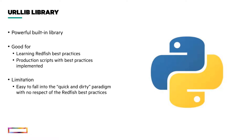The urllib built-in Python library is the equivalent of the InvokeWebRequest PowerShell command presented earlier. The advantage of this built-in library is that you don't need to load it prior to use it, and you can use it for any purpose like discovering the Redfish architecture or writing production scripts. However, this foundation library is not very well suited if you want to implement Redfish best practices and support multi-vendor or multi-generation Redfish services. Moreover, you will have to create your own code to manage the different types of authentication as well as error logging for each type of HTTP request.